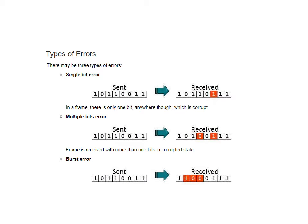Similarly, we have the multiple bit error, where instead of 1 bit getting changed, multiple bits are changed. For example, the original data 10110011 gets changed to 10100111. The third type is the burst error, where consecutive corrupted bits are received. The sender sends 10110011, but the receiver receives 100111 — meaning 3 consecutive bits, shown as red boxes in the diagram, are changed, either due to network noise or network hackers.